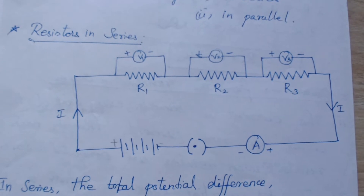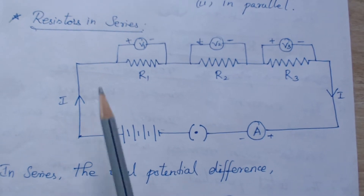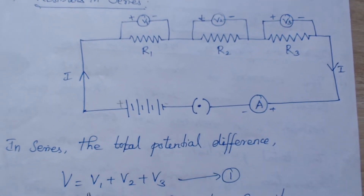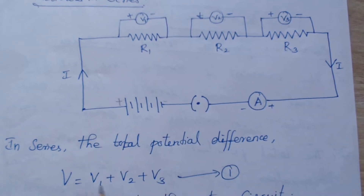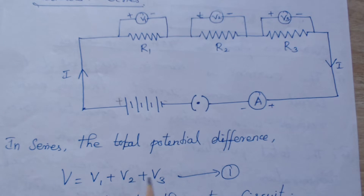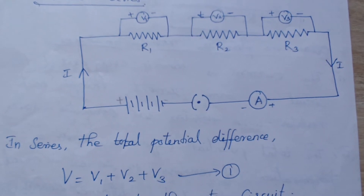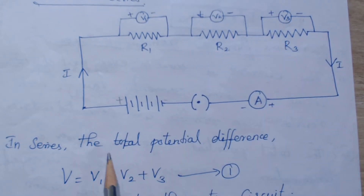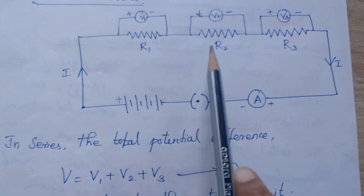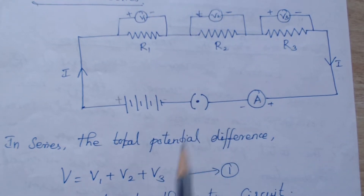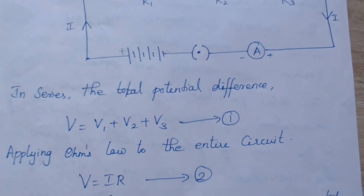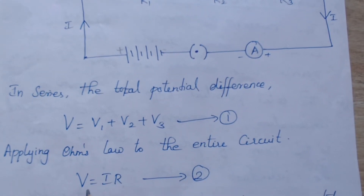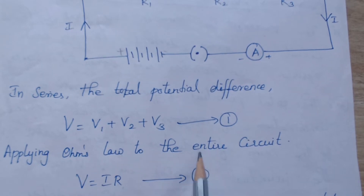From the activity, all observations have been taken. In a series circuit, the total potential difference is V equals V1 plus V2 plus V3. We are going to apply Ohm's law. Ohm's law states that the potential difference is directly proportional to the current flowing through the conductor. To remove the proportionality, we introduce the constant R, so V equals IR. This is for the entire circuit.